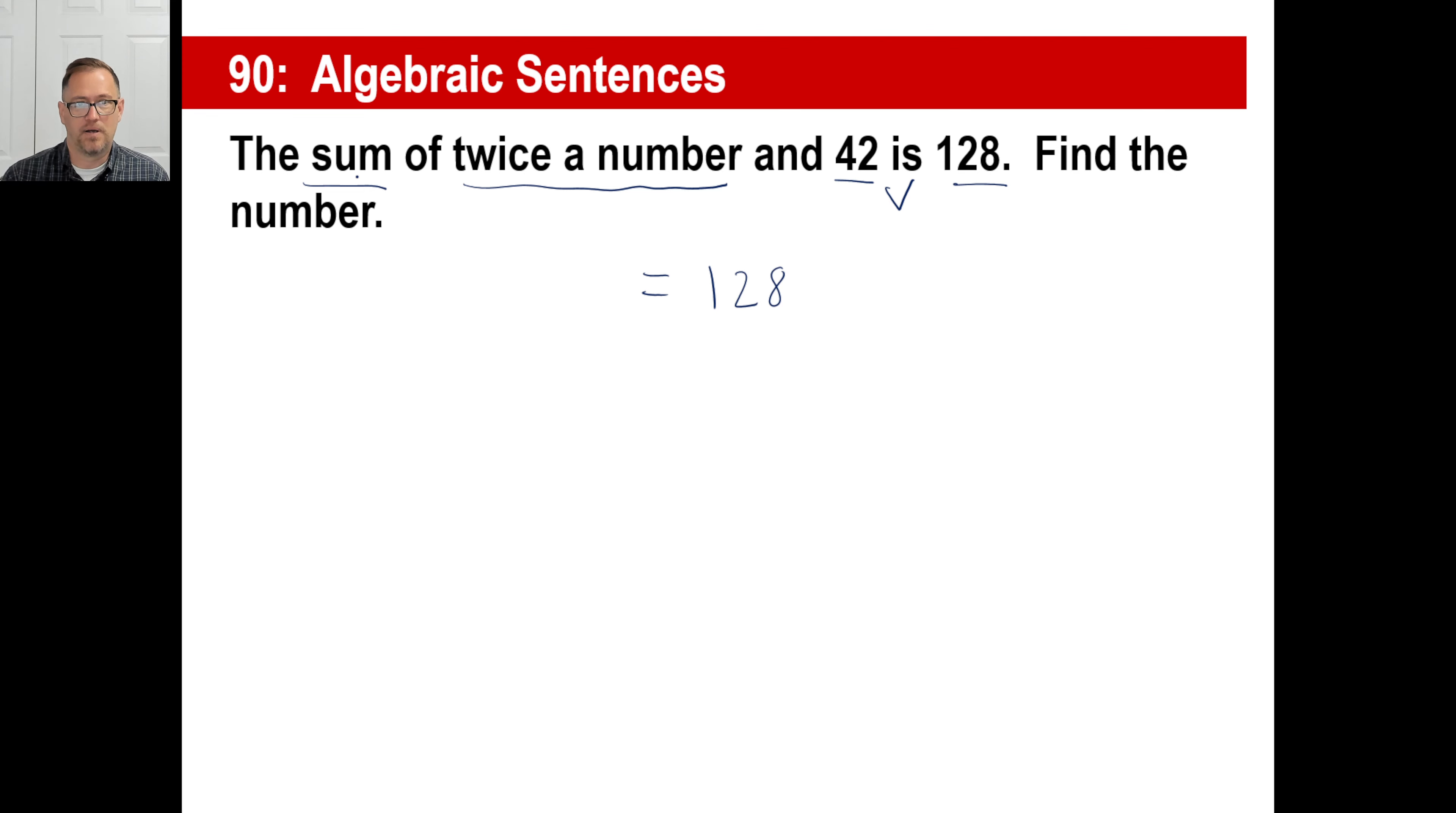Now I'm going to find this part. So the sum of twice, oh, that's going to be a sum, twice a number, 2x and 42, 42. Oh, I got it. 2x plus 42 equals 128.